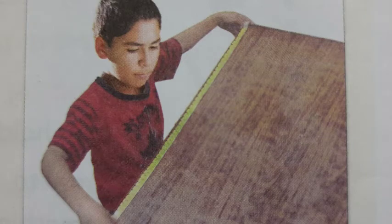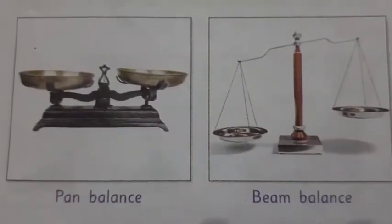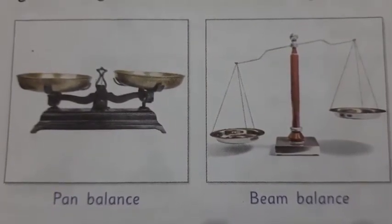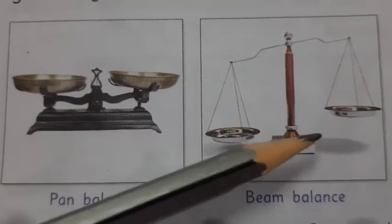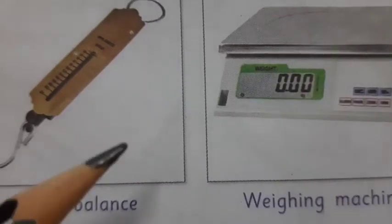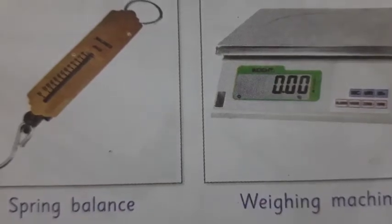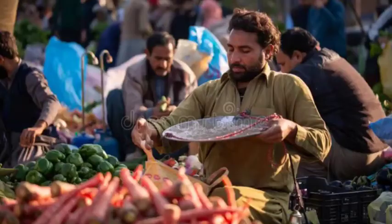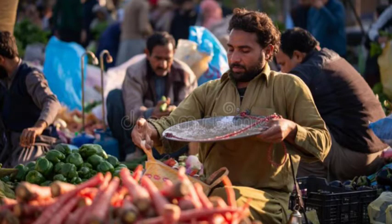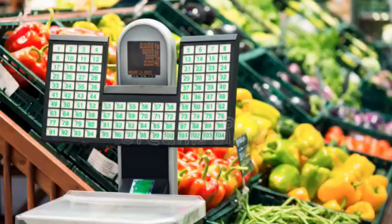Number two: Measurement of Mass. Gram is the standard unit to measure weight or mass. Pan balance, beam balance, spring balance, and weighing machines are used to measure weight or mass. For example, fruits, vegetables, grains, and seeds are measured in grams and kilograms. Smaller masses are measured in grams and larger masses are measured in kilograms.